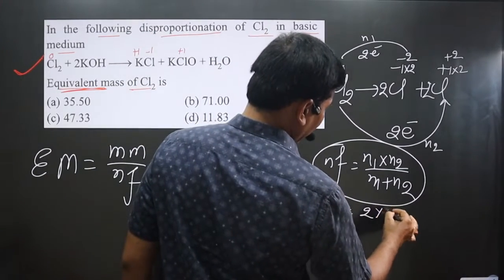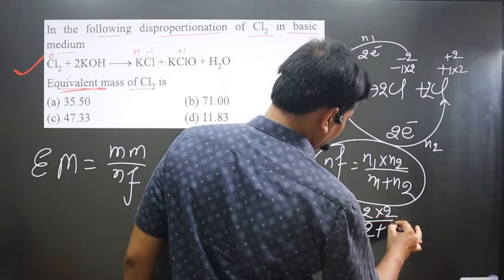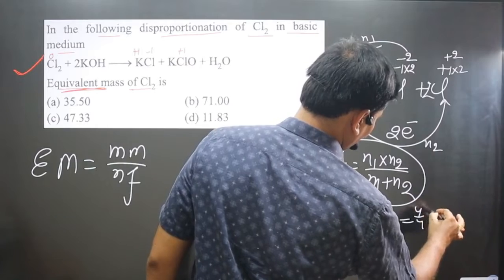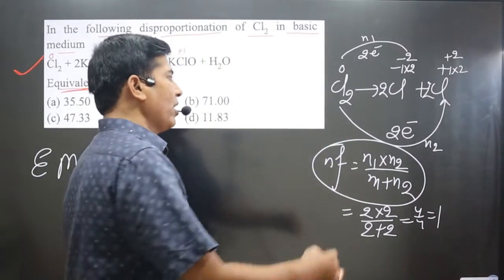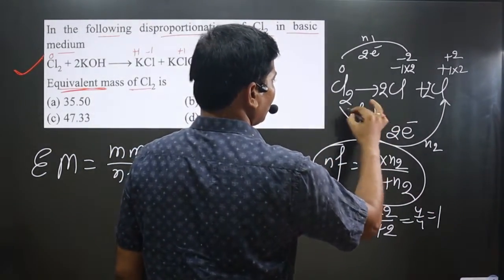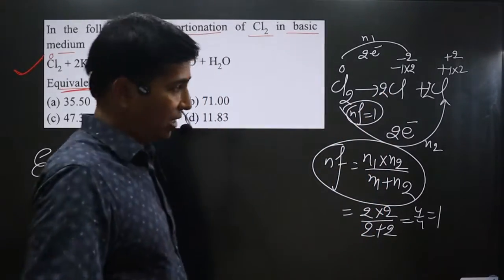So we have 2 multiplied by 2 divided by 2 plus 2. So we have 4 by 4 is equal to we got 1. N factor value for Cl2. We got N factor value for Cl2 is 1. This is how you should calculate.